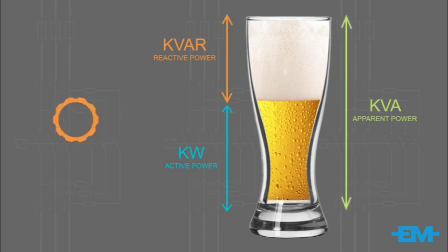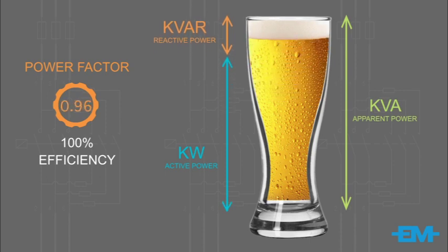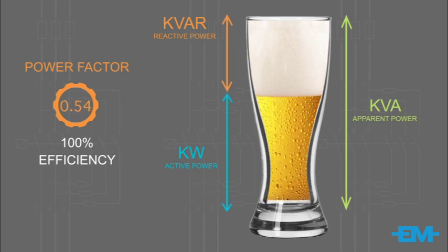The total contents of the glass — the beer and the foam — is represented by KVA, and you pay for both. A power factor of 1 would mean 100% of the supply is being used efficiently, therefore there is no reactive power; KVAR would be very small and the foam would be approaching zero. Unfortunately, a power factor of 1 is not obtainable because equipment such as electric motors, welding sets and fluorescent lighting create an inductive load which will cause the power factor to become less than 1.